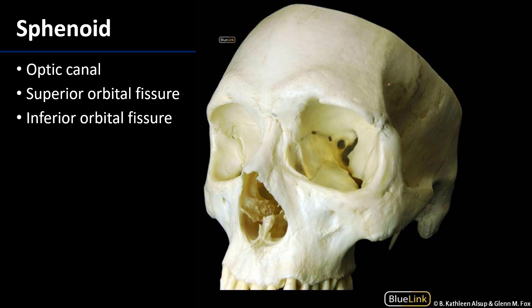The sphenoid bone is most significant in the orbit as the posterior wall, and there are a couple of features important for the conveyance of neurovasculature. The first is the optic canal — the osseous canal through which cranial nerve 2, the optic nerve, as well as the ophthalmic artery run. So cranial nerve 2 and the ophthalmic artery run through the optic canal.